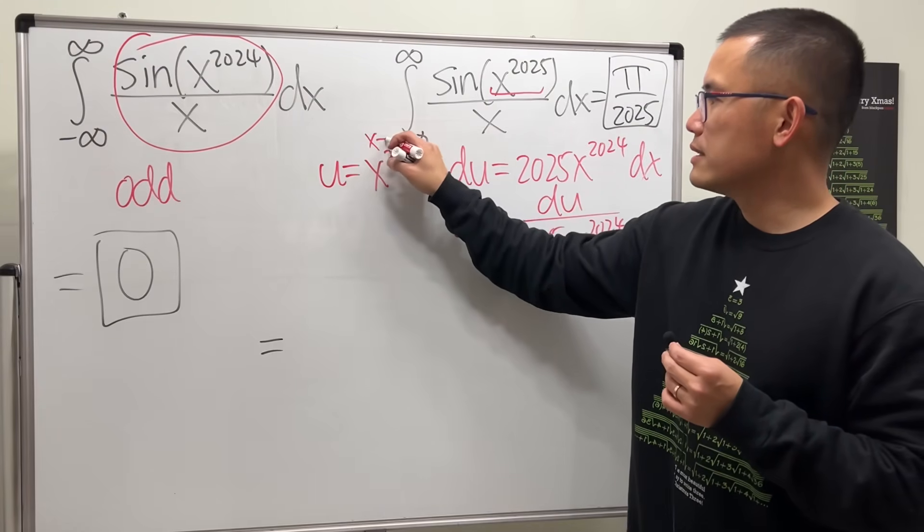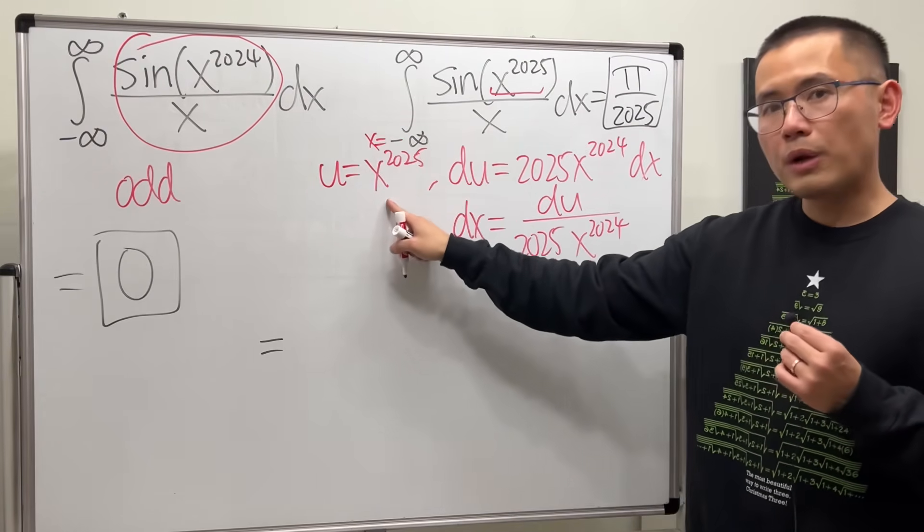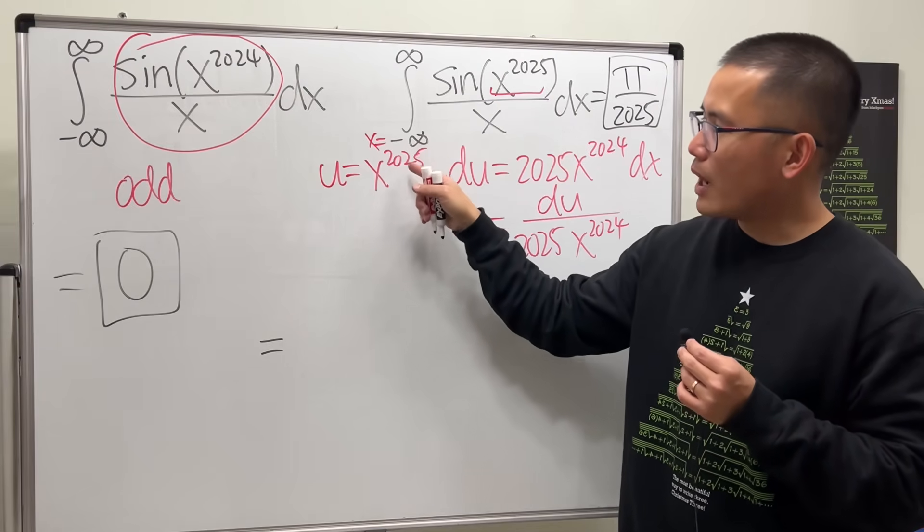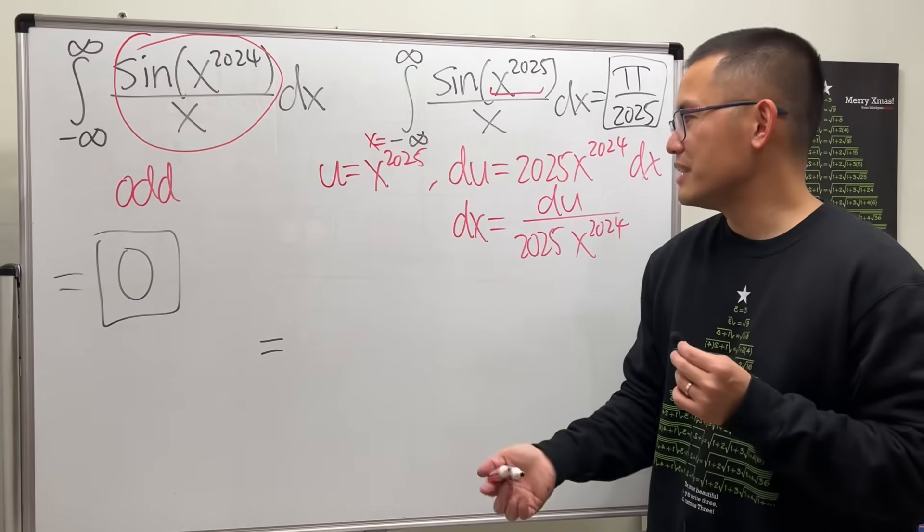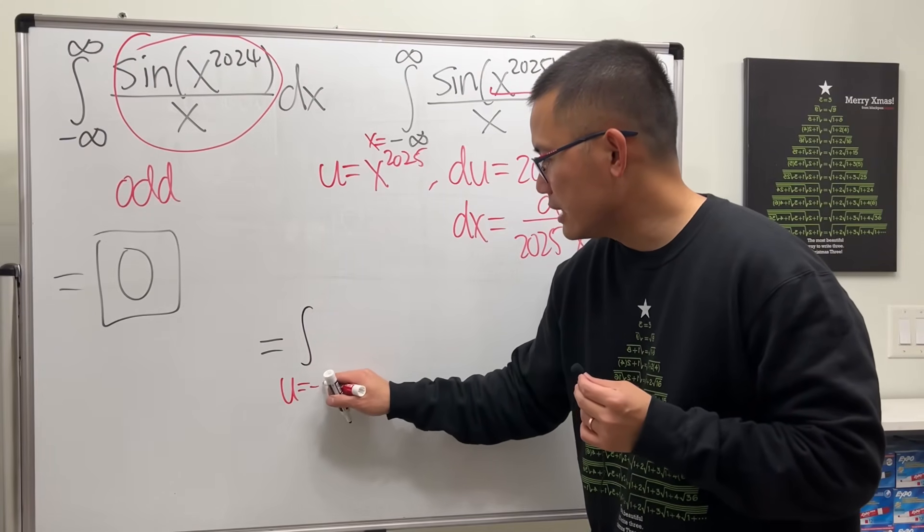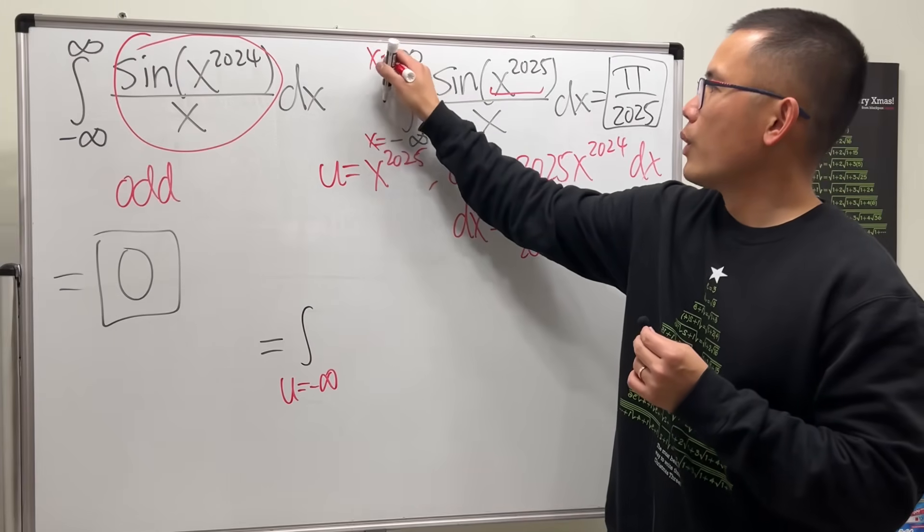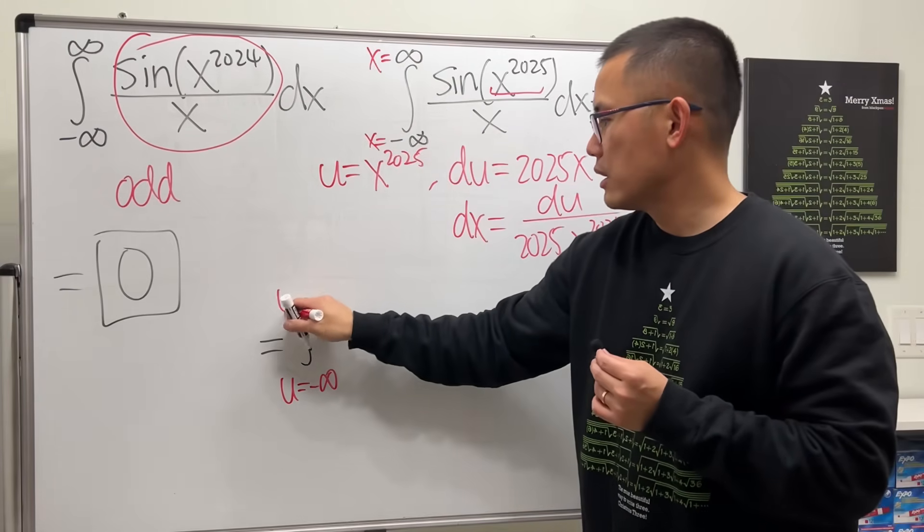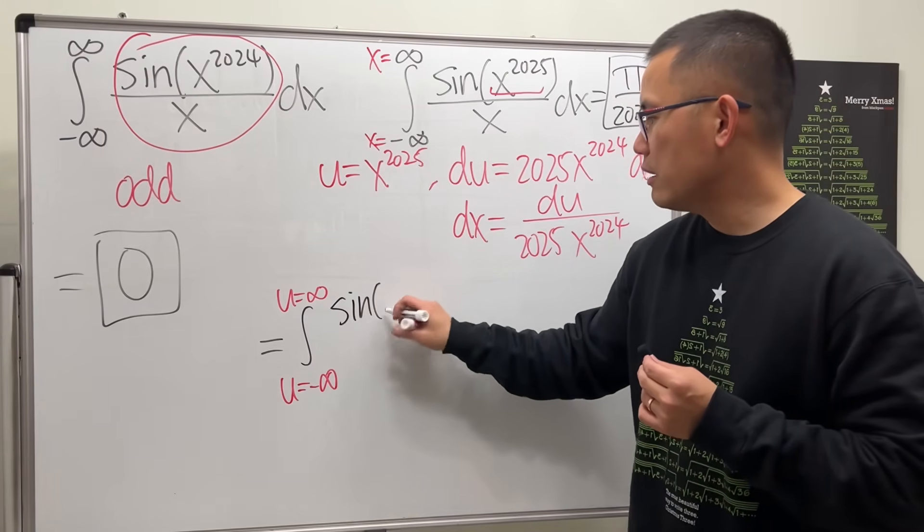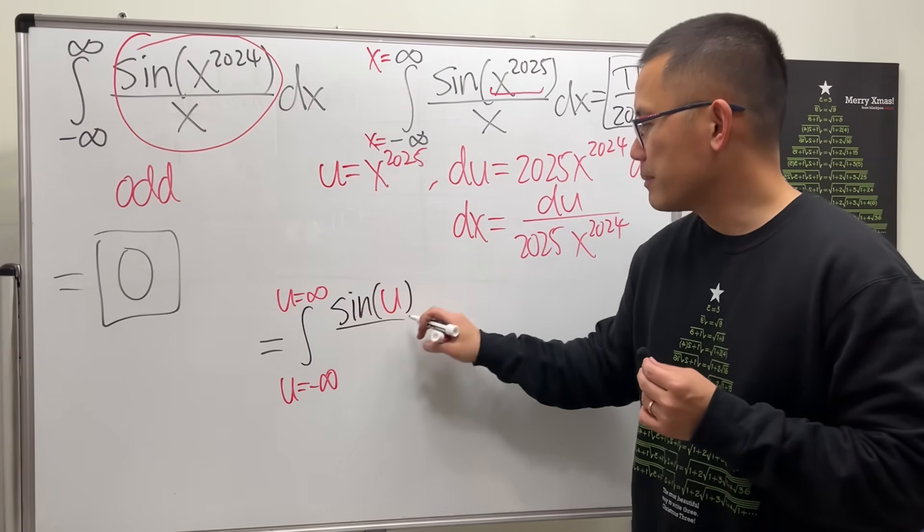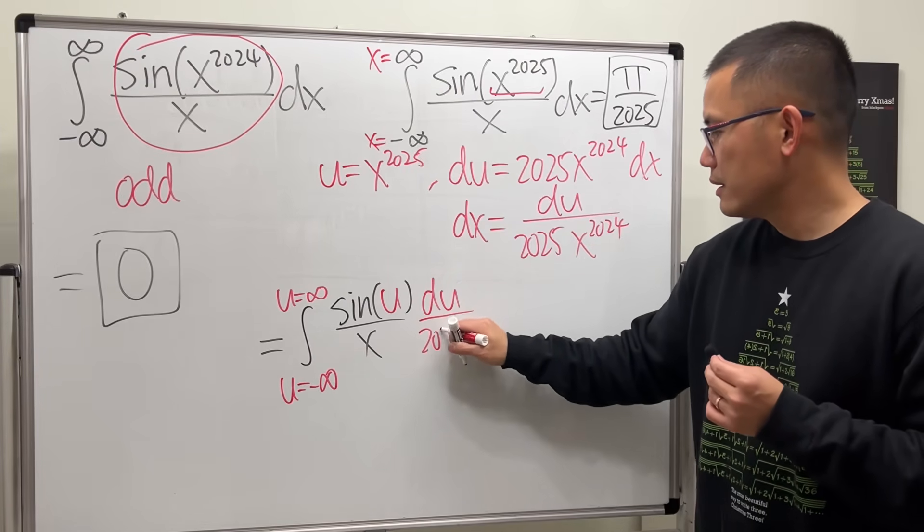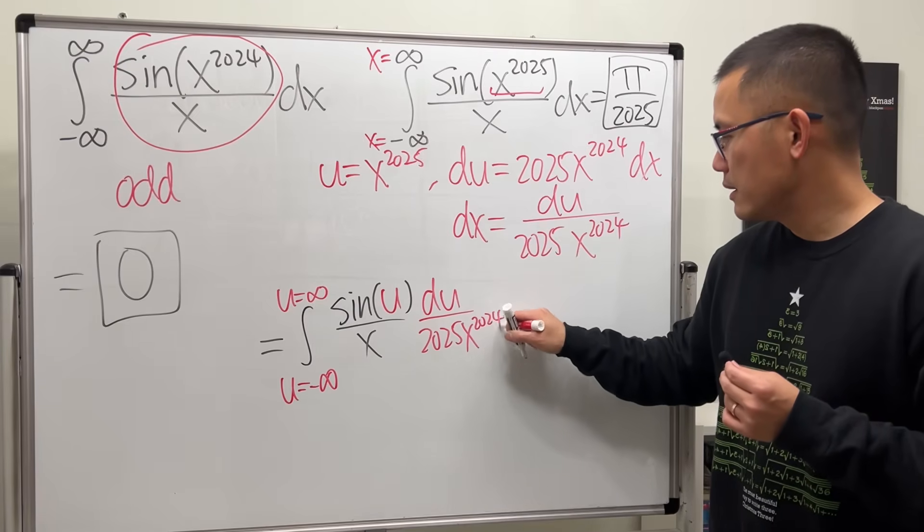Now, take this into the u world. Well, this is when x is approaching negative infinity, but when you plug into here, negative infinity to a positive odd power, you will still get negative infinity. So this right here, u will also start at negative infinity. And then when you have infinity to here, that will also give you positive infinity. And then here we will have sine of u, and then on the bottom we have dx, and the dx is this thing. Cool.